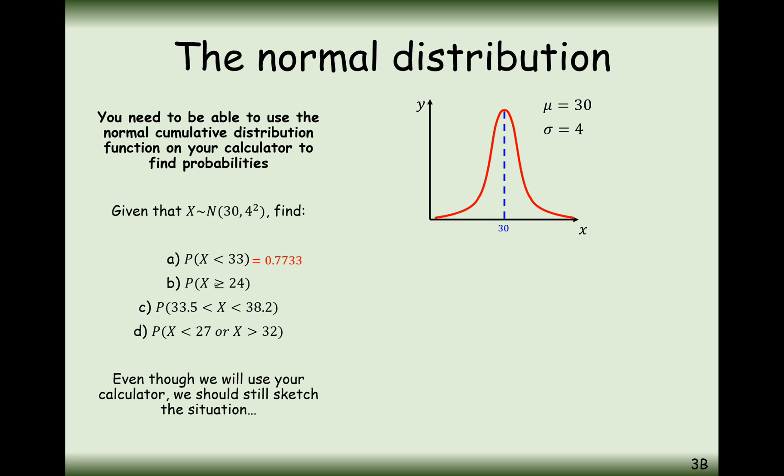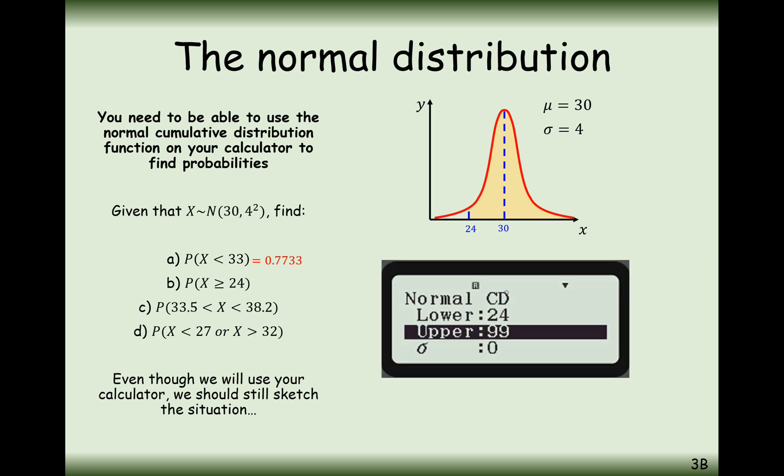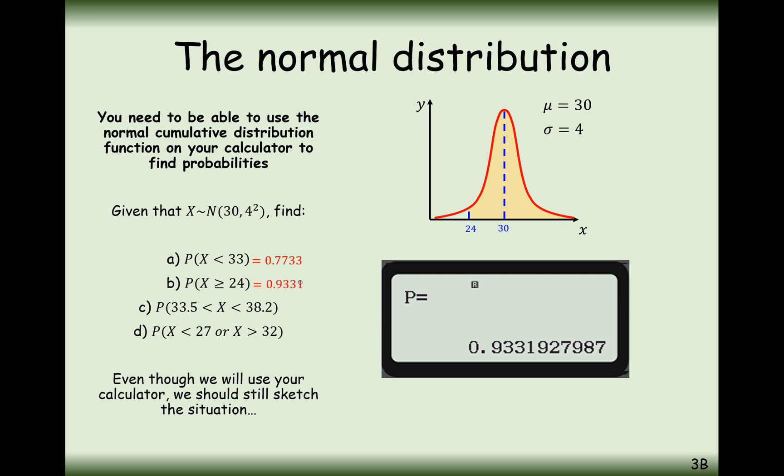For the next question, we're going to work out the probability of X being greater than or equal to 24. It doesn't matter if you use a greater than or equal to or greater than symbol, because it's just an area from a cutoff point line. So grab the calculator into that normal CD mode again. The lower boundary this time will be 24, the upper boundary will be 99 or 999. We get a final answer of 0.9332.